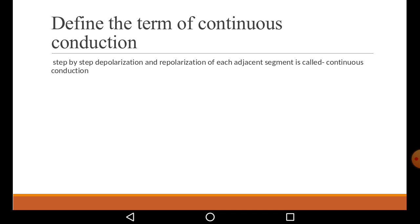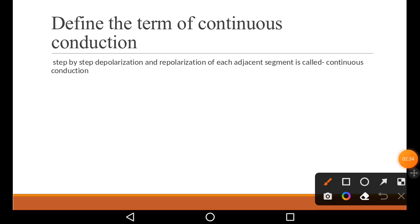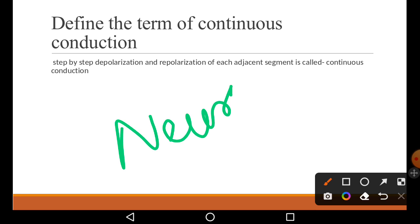In continuous conduction, what happens is step-by-step depolarization and repolarization of the neurolemma. What is neurolemma? It is just like the plasma membrane of the neuron — the plasma membrane of neurons is called neurolemma.